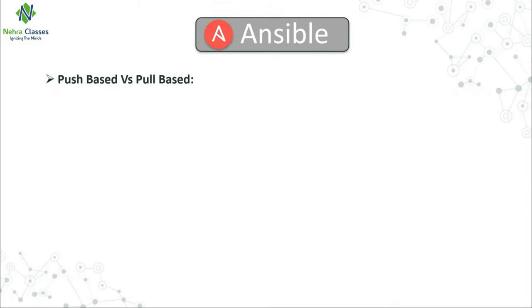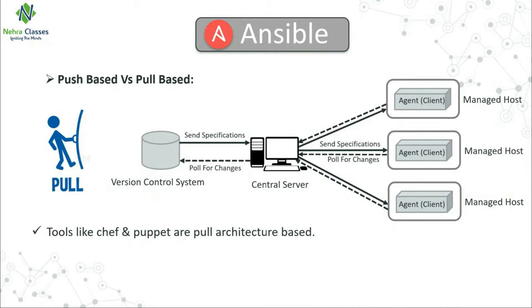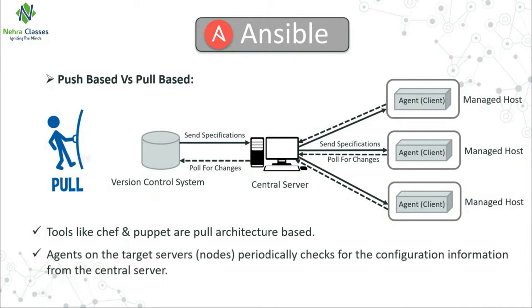In a pull-based system, the relationship between the VCS and central server is the same — it constantly pulls for changes. The main difference is that a pull-based tool has an agent present, which manages all your nodes. This agent constantly pulls the central server for any configuration changes, and only when it finds changes does it apply them to the node machines. So you have to wait for the agent to pull those changes before they take effect.